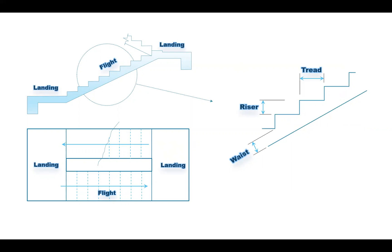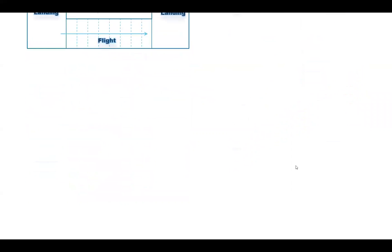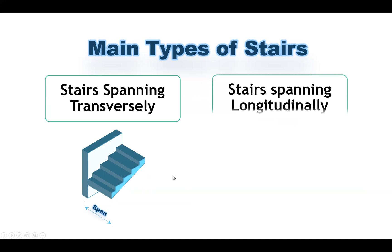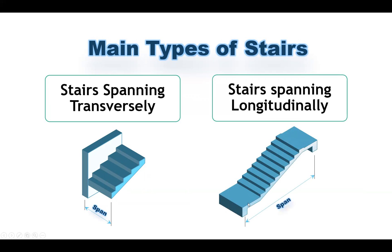As we are talking about reinforced concrete stairs, we should also have some reinforcement. We will have reinforcement in the longitudinal direction and reinforcement in the transverse direction. In general, there are two main different types of stairs. The first type is stairs spanning in the transverse direction, where the span will be in the transverse direction, supported on a wall, two walls, or beams. The second type is stairs spanning in the longitudinal direction.